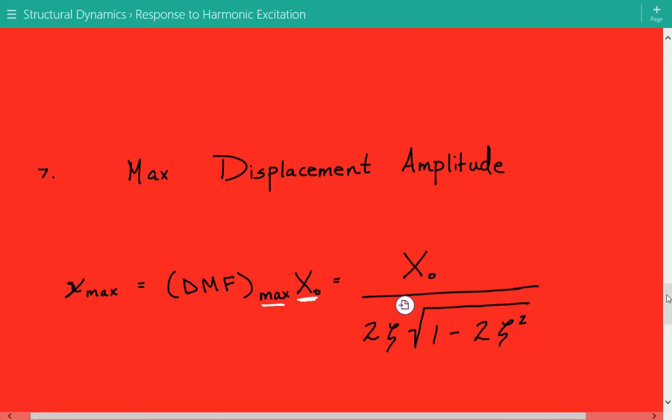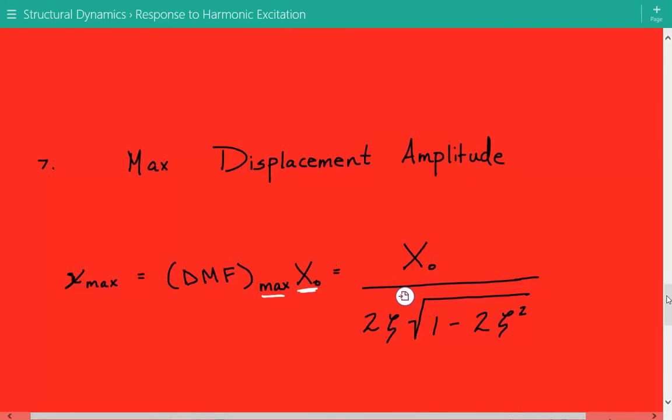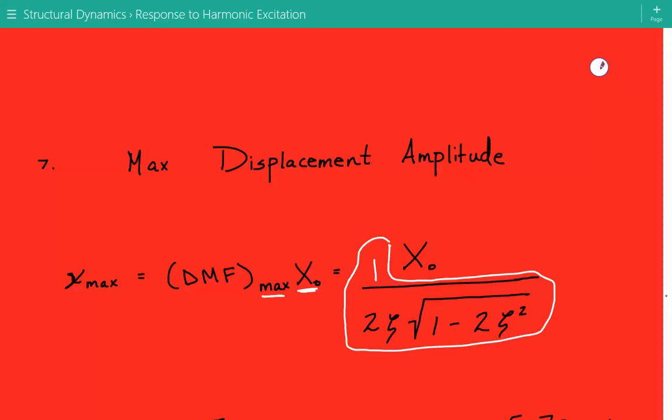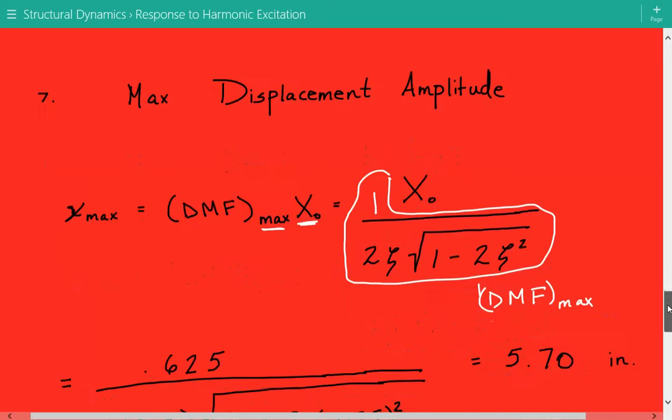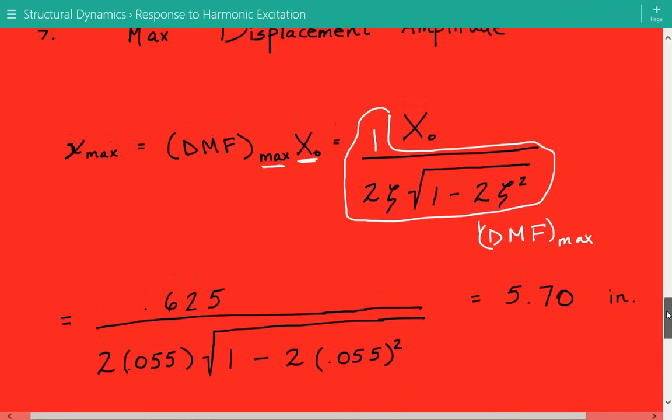So there's a special way that this equation for the dynamic magnification factor maximum is obtained. Again, I won't derive it here, but it equals 1 divided by 2ζ times the square root of (1 - 2ζ²). This is our DMF max, then times X₀. Plugging in the numbers, we get that the maximum displacement amplitude equals 5.70 inches.